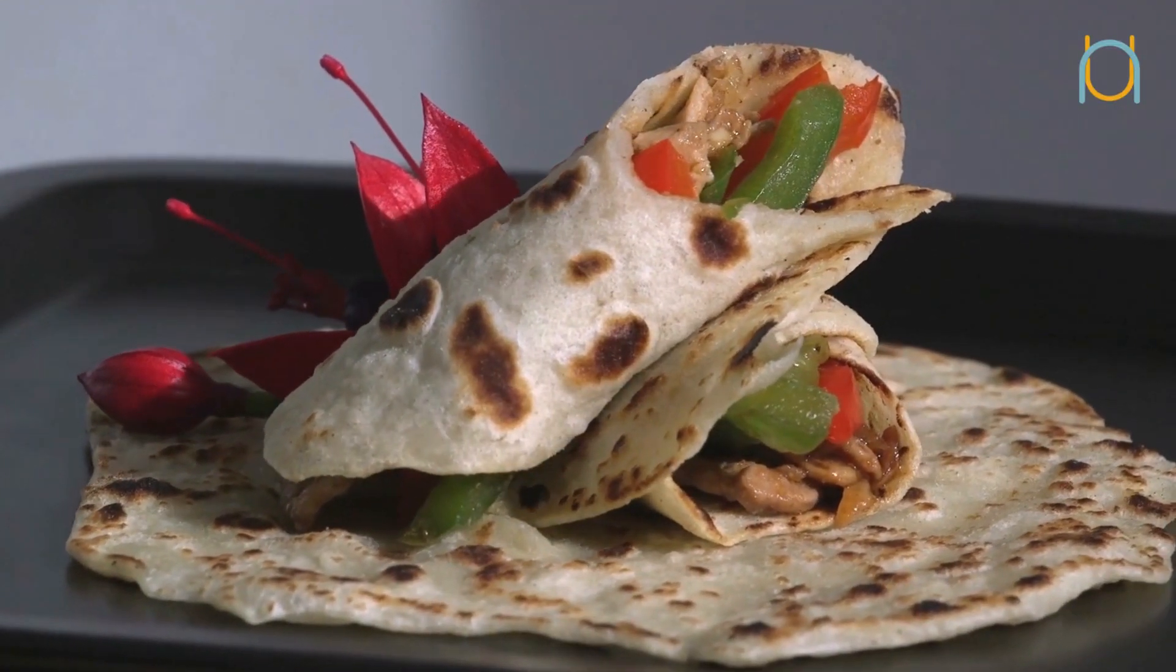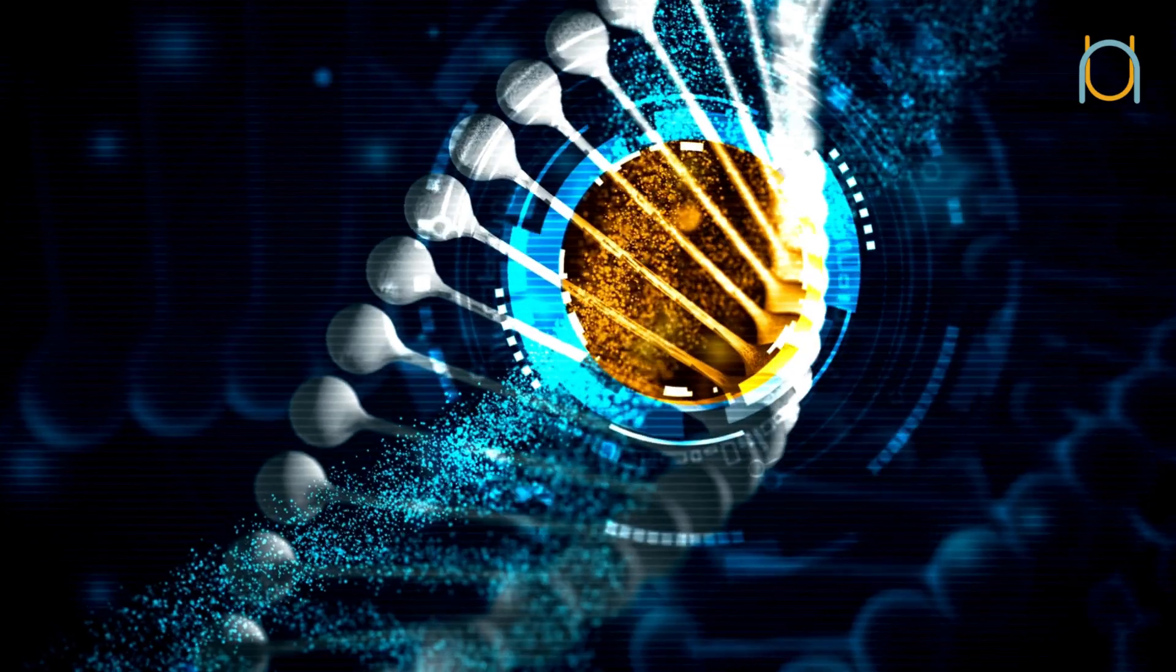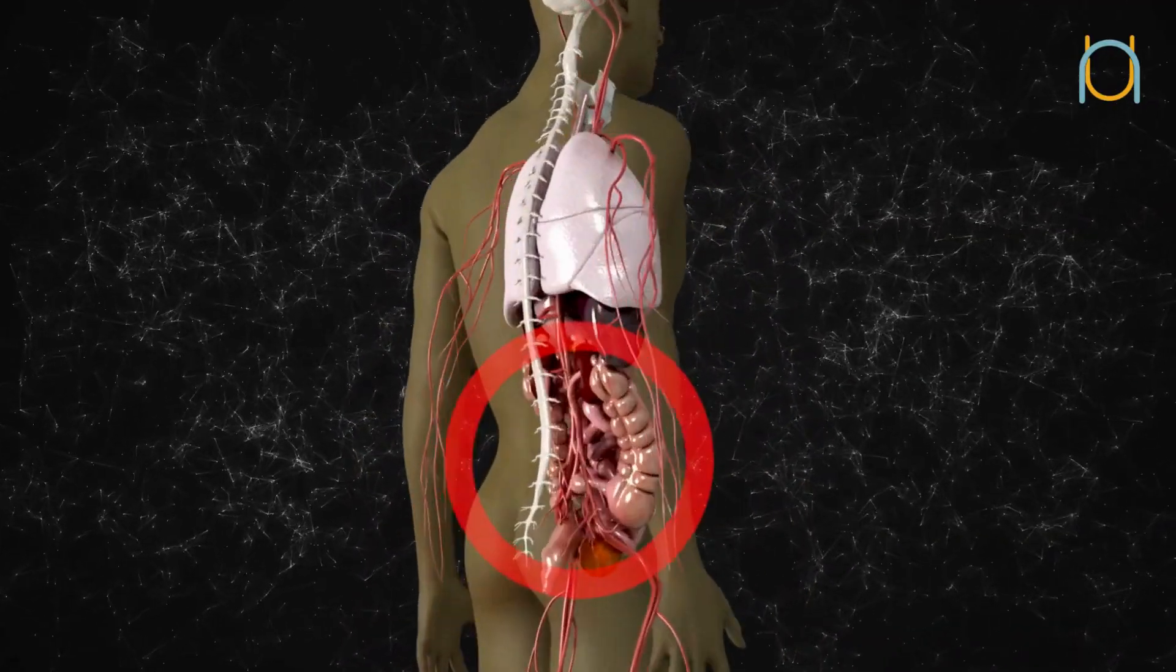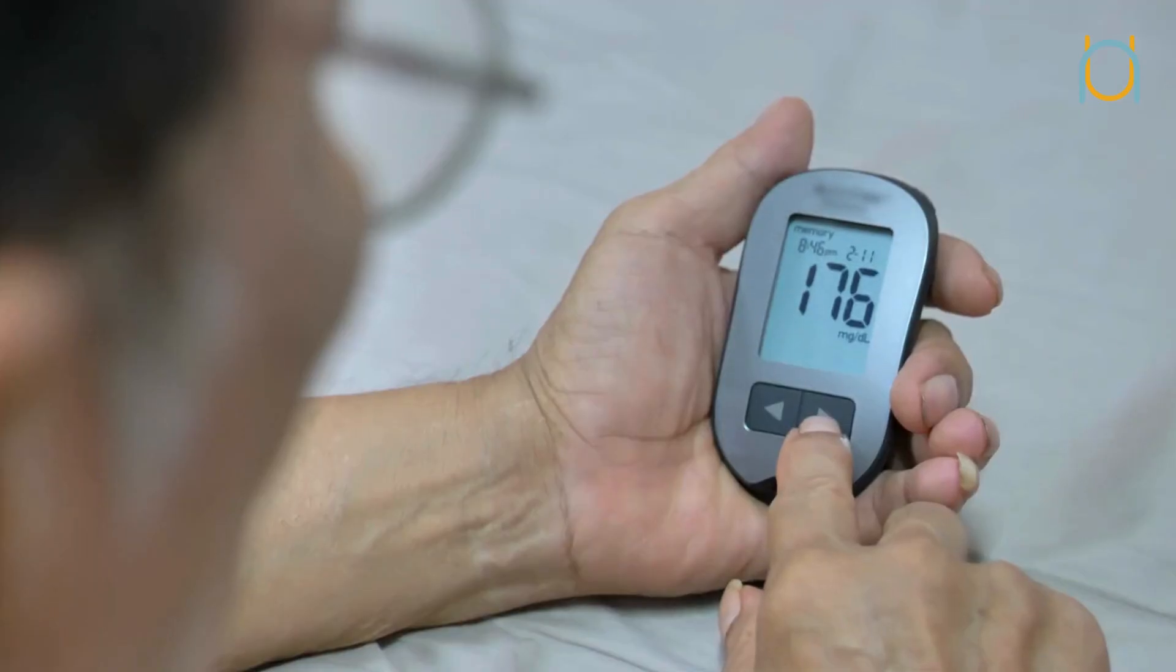Did you know that your food interacts with your genes to influence your health? This interaction affects various molecular pathways in your body, potentially increasing the risk of chronic diseases like cancer, diabetes, and heart disease.